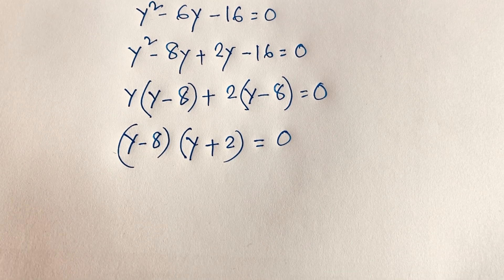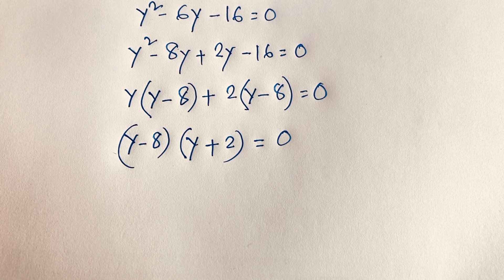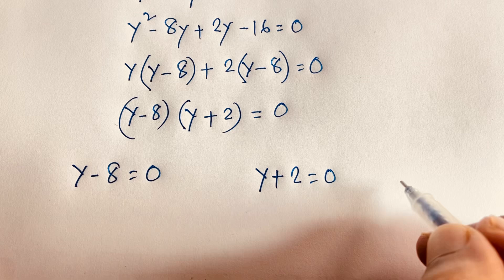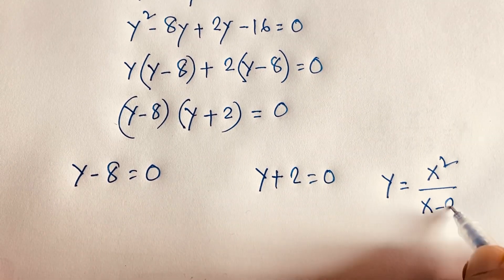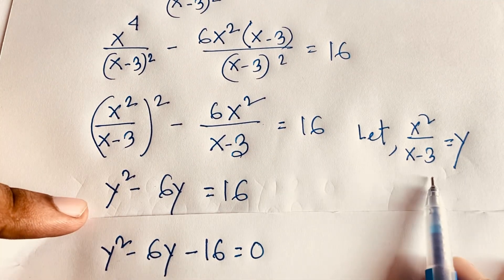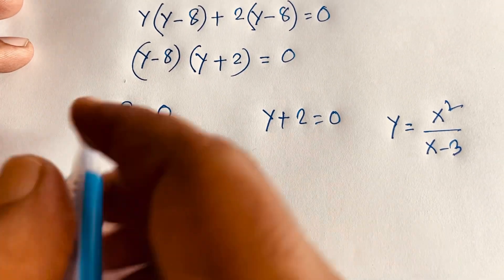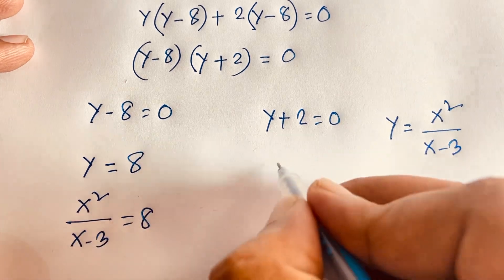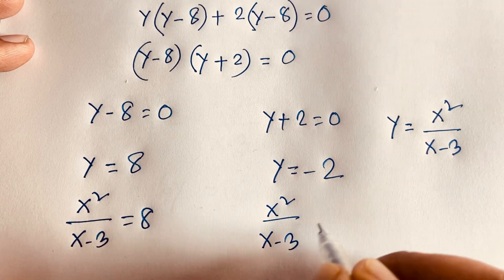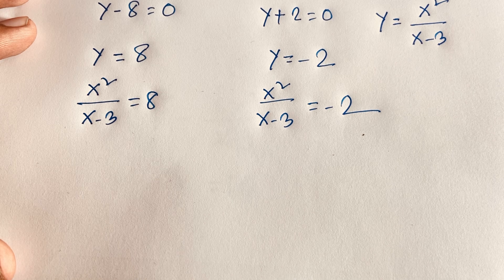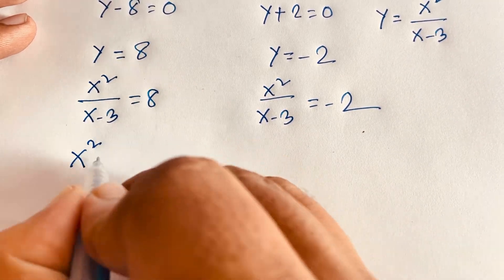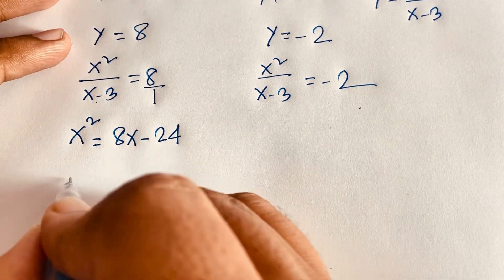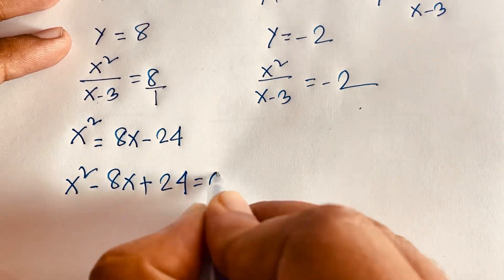This gives two cases: y - 8 = 0 or y + 2 = 0. Recalling y = x² / (x - 3), Case 1 is x² / (x - 3) = 8, which gives x² = 8x - 24, or x² - 8x + 24 = 0.